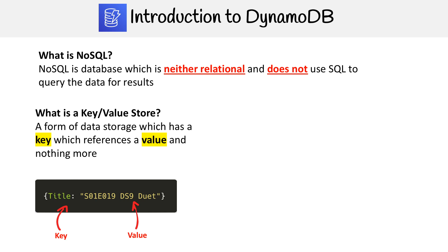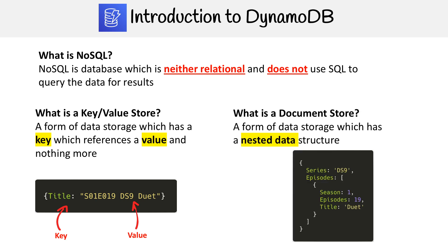That is one data structure you can have in DynamoDB. The other one is document store, which is a form of data storage that has a nested data structure — that is what they call the document.